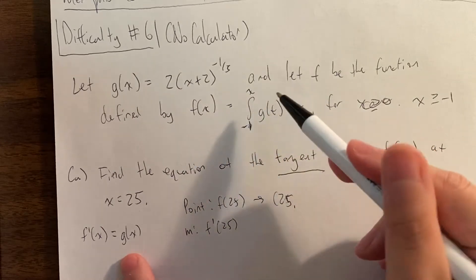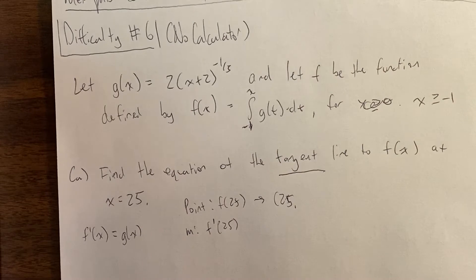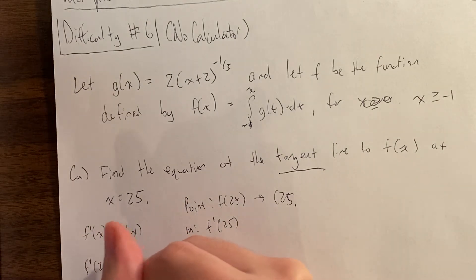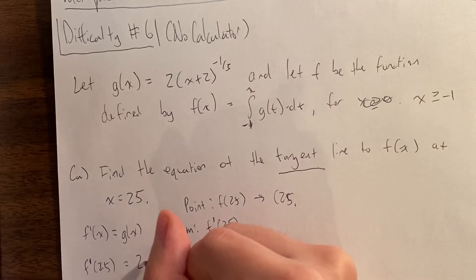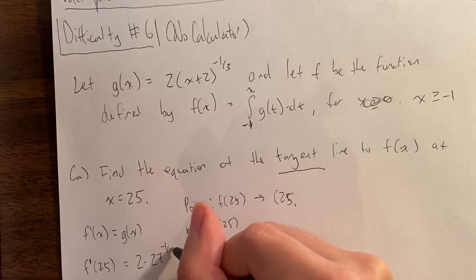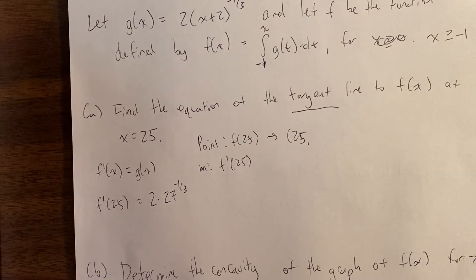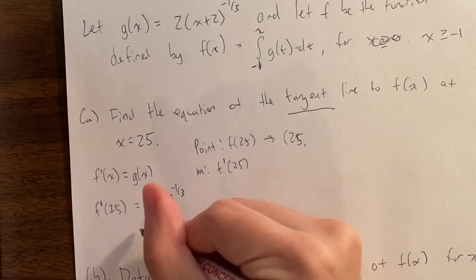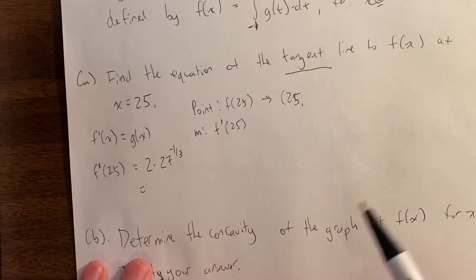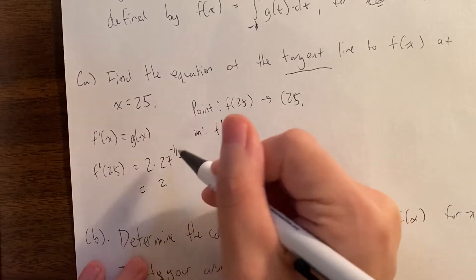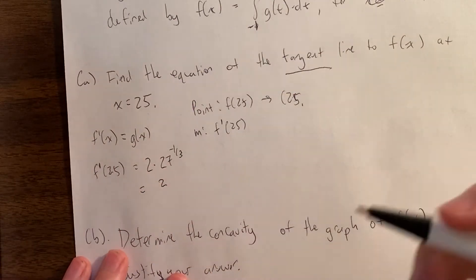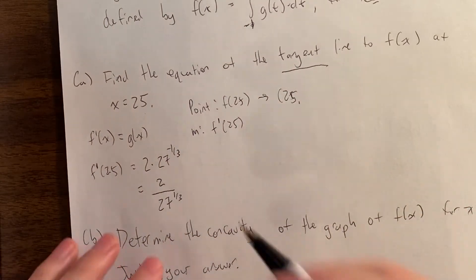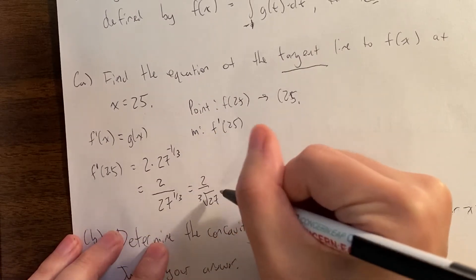All it is: to take the derivative of an integral, you just replace the variable and have the function you started with. When we plug in 25, it's going to be f prime of 25 equals 2 times (25 + 2), which is 27, to the negative one-third. This free response question deals with negative exponents and fractional exponents. Since we don't have a calculator, we compute by hand. Anytime I have a negative exponent, I take it to the denominator. So it's going to be 2 over 27 to the one-third. Since fractional exponents mean root, that's 2 over the cube root of 27, so we get two-thirds as our slope.